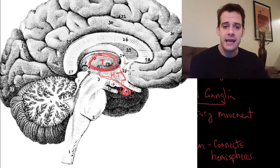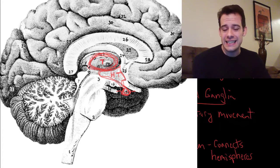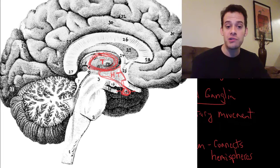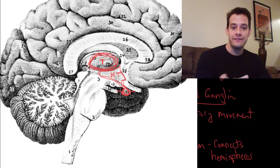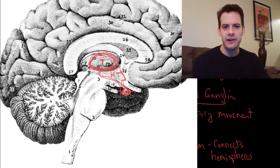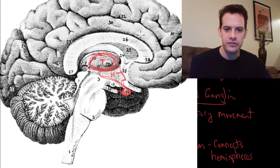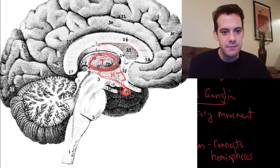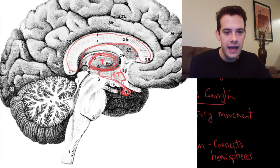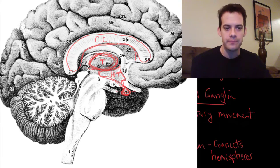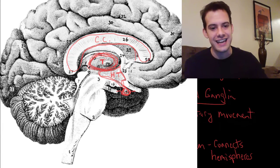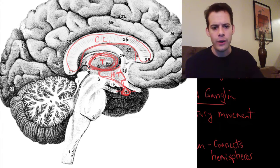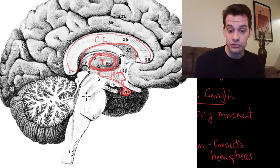The limbic system and basal ganglia aren't easy to see in this sagittal view — this cross-section through the middle — because those structures extend toward and away from us on either hemisphere. However, we can see the corpus callosum: this big group of fibers right here in the center, connecting the two hemispheres.